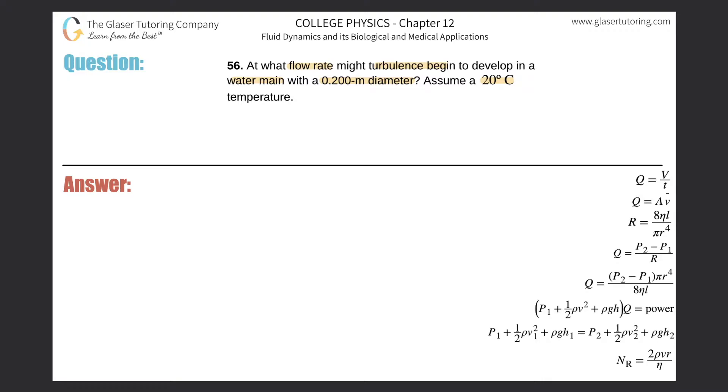All right, so we know just by virtue of the question of what flow rate might turbulence begin, you have to think about how do we know if turbulence will begin or it won't? And we know that we have certain cutoff points for the Reynolds number, right?